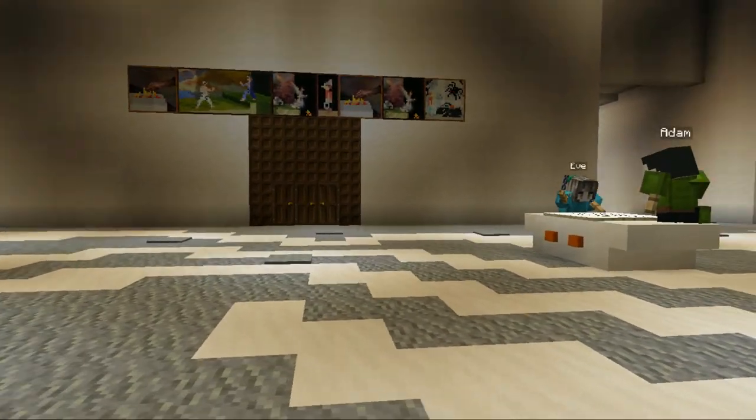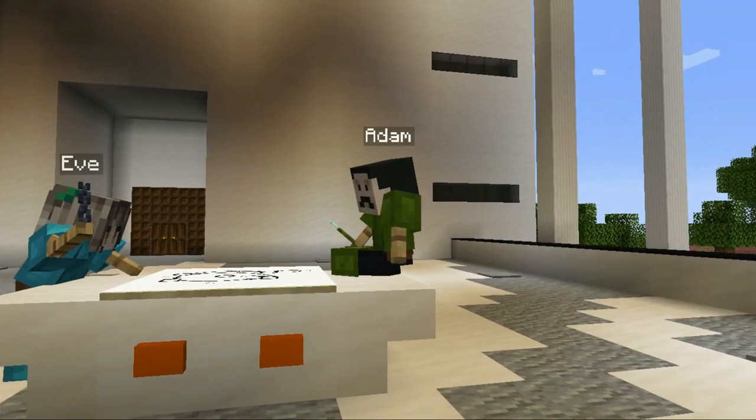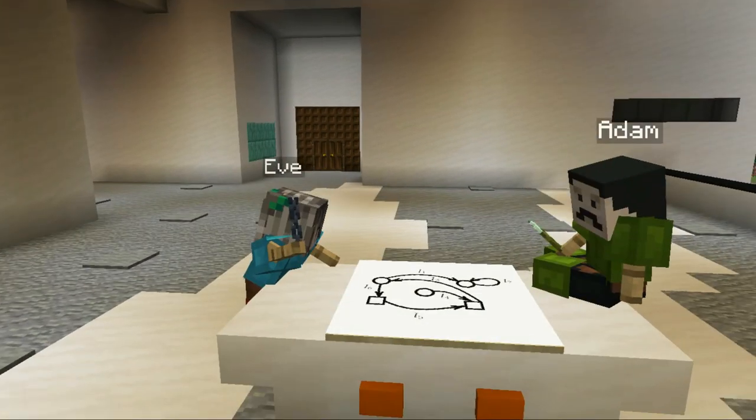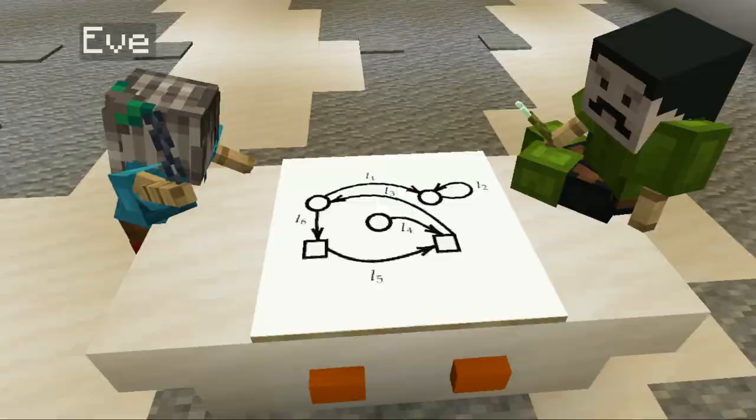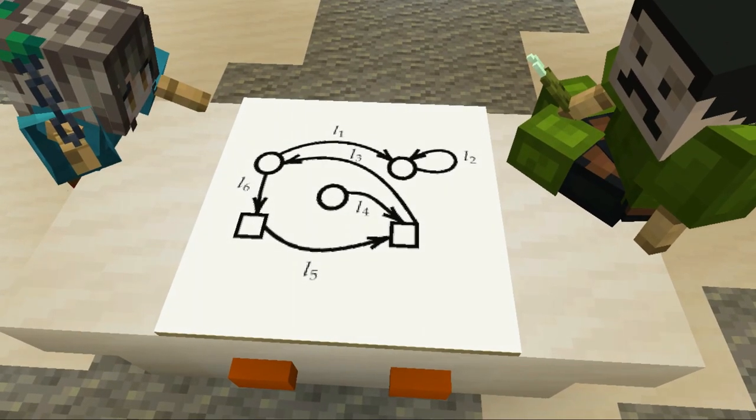We will consider games on labeled graph played between two players Adam and Eve with certain winning objectives on the infinite sequence of labels generated by the play.